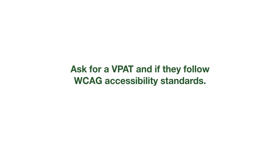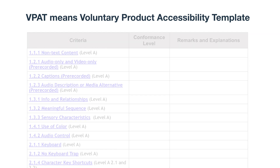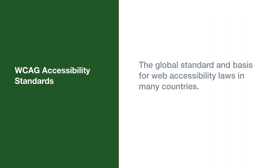Now let's start with the technical stuff — asking for a VPAT and if they follow WCAG standards. VPAT stands for Voluntary Product Accessibility Template. This is an industry standard report. Basically, it lists all the web accessibility standards and the vendor marks the conformance level to that standard and can provide any notes.